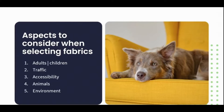For example, if we have only adults in the space with low traffic, easy accessibility to that fabric, no animals, and no direct sunlight, we have a much wider variety of fabric choices. If we had animals on the couch, we'd obviously want a hard-wearing fabric that's easy to clean and doesn't attract fur. A key tip to remember: comfort is one of the most important factors when choosing fabric for your interior — people need to function and live within these spaces, so comfort is key.